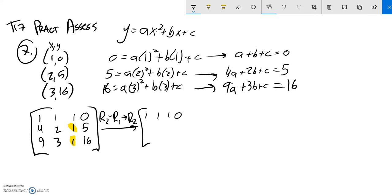My second row now will be 4 minus 1 is 3. 2 minus 1 is 1. 1 minus 1 is 0. 5 minus 0 is 5. So I made my zero there.